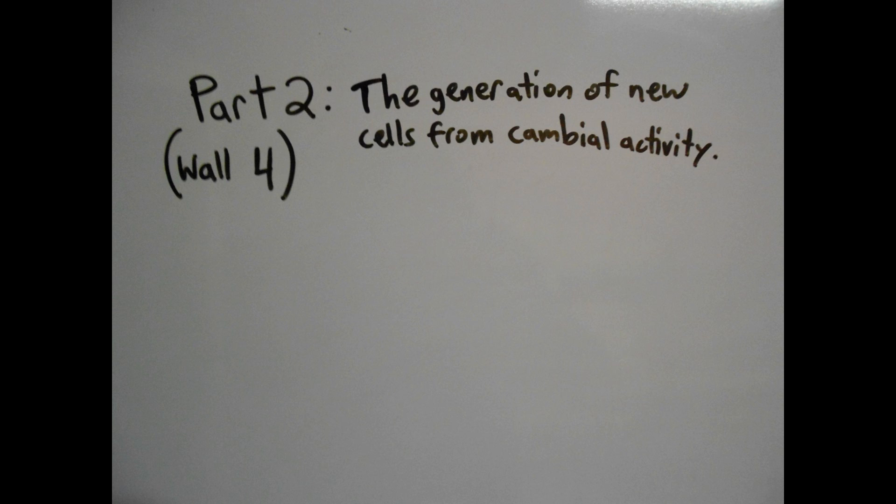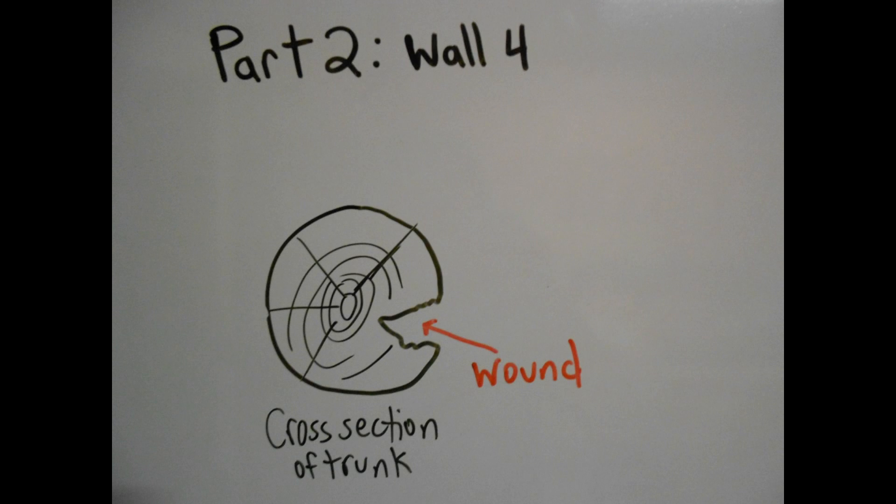The second group of responses occurs with the first flush of growth post-wounding. This means that the defensive processes of part two do not initiate until or unless the tree is in its growing season or when the cambium is active. For a basic example, if a tree is wounded during the winter, it will not initiate the second part of the process until the spring or the next surge of cambium activity.